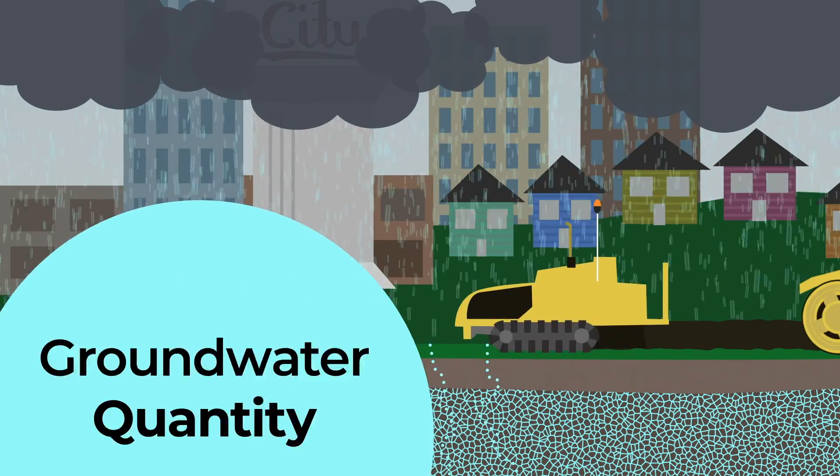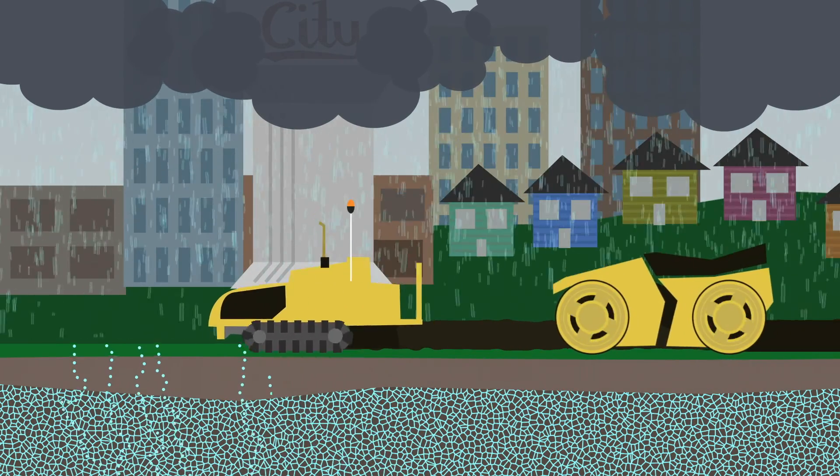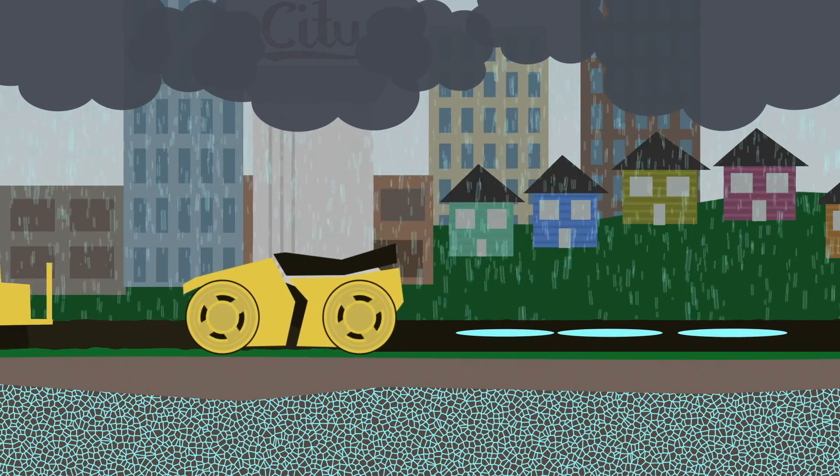Things like buildings and roads block water from soaking into the ground. When our landscape is dominated by these kinds of surfaces, they interrupt the natural refilling process that keeps groundwater plentiful.